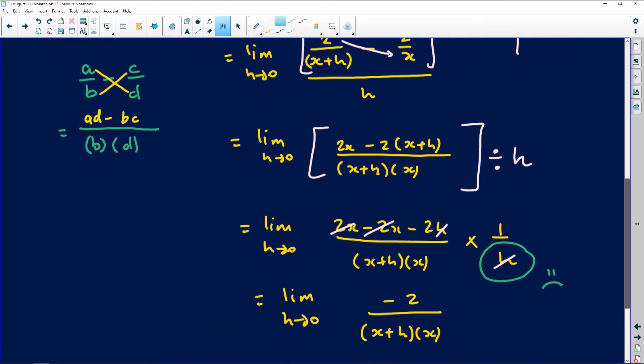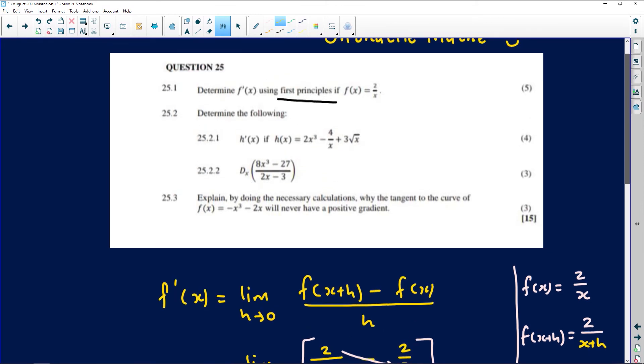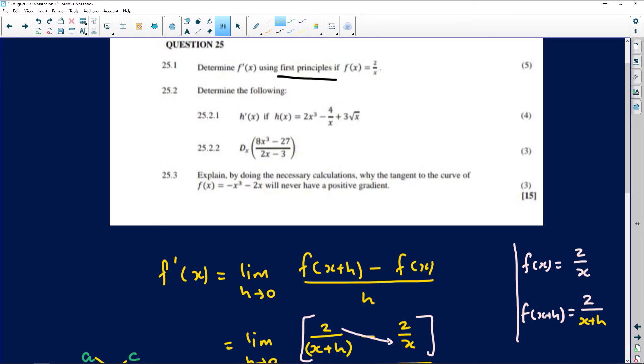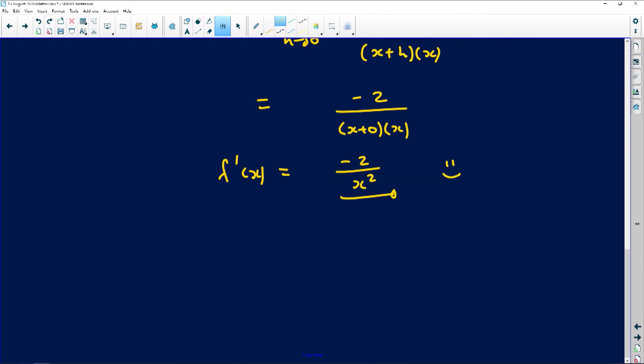Let's go on to the second one. The second one says we now need to find h prime of x if h of x is 2x cubed minus 4 over x. They're not telling you to use the first principle formula now, so we can apply our laws of differentiation for the second one. It says h of x equals 2x cubed minus 4 over x.